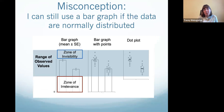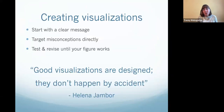This is a second example from one of our later papers — a visualization designed to address the misconception that you can still use a bar graph to show continuous data as long as those data are normally distributed. When you create visualizations, you want to start with a clear message, target misconceptions directly, and go through many versions of your figures. The first version is never going to be good, so you want to test and revise until your figure is working.